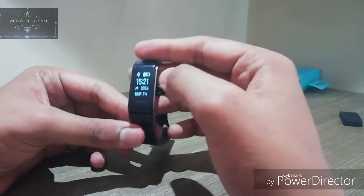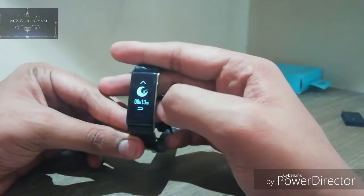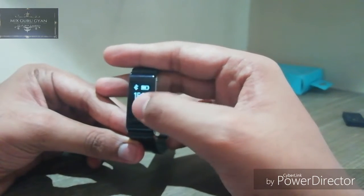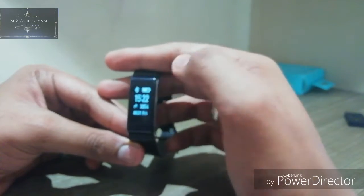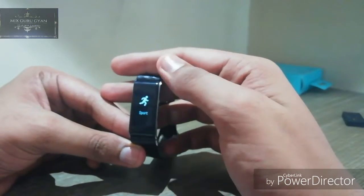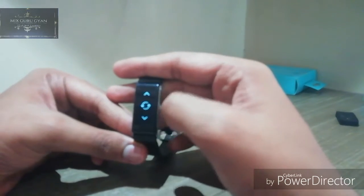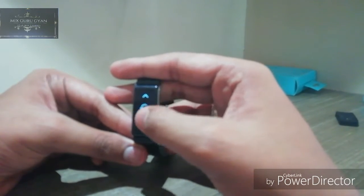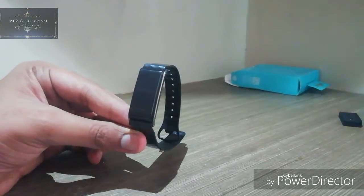And I am going to show you the specifications. You can see calories, steps count, and date, Bluetooth connection, battery, time, then sports mode, cycling mode, heart rate sensor. And in mode you can also see find my phone, reset, and you can get an option of information.